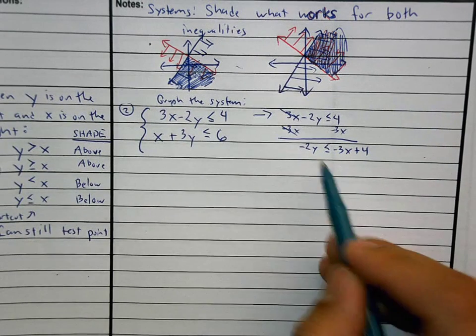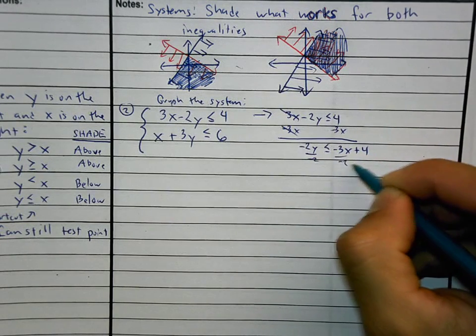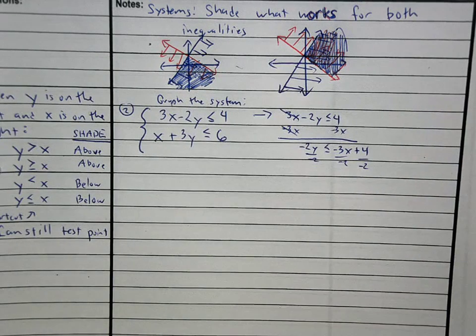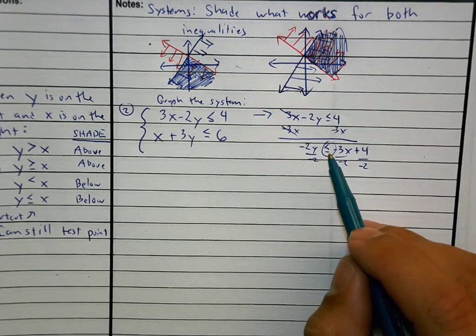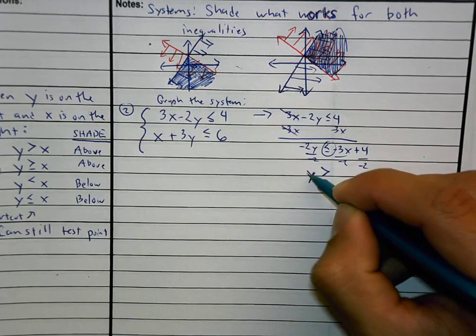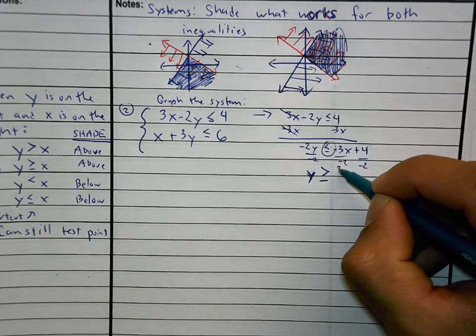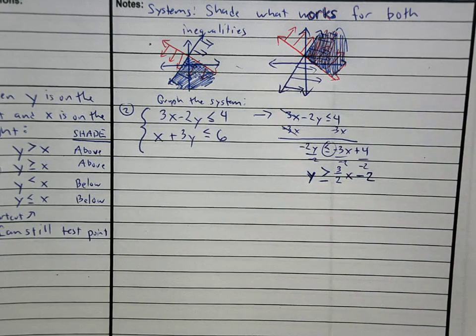And then I don't have the Y by itself. Divide by negative 2, divide by negative 2, divide by negative 2. When you divide by negative 2, because you're dividing by negative, this has to flip. Greater than or equal to. Y, negative Y by negative is a positive 3 over 2X minus 2.